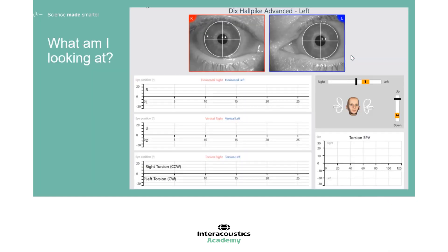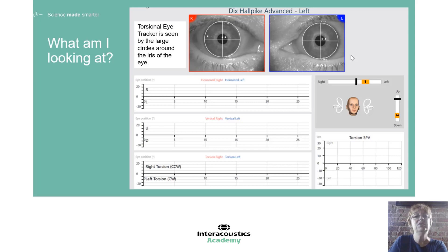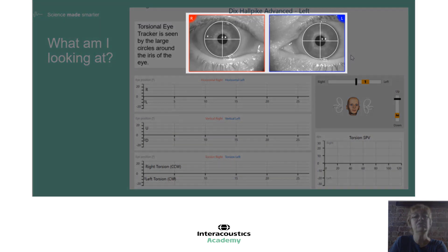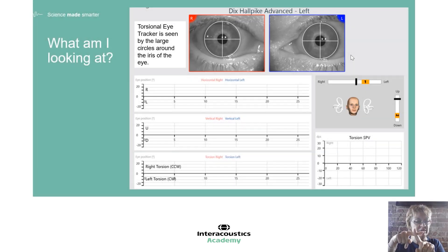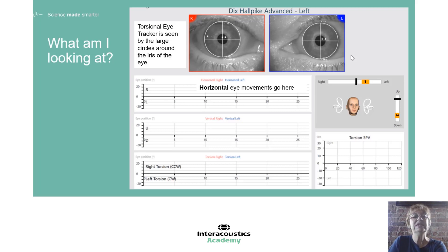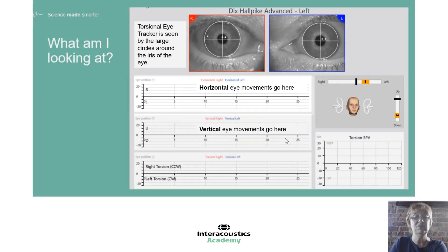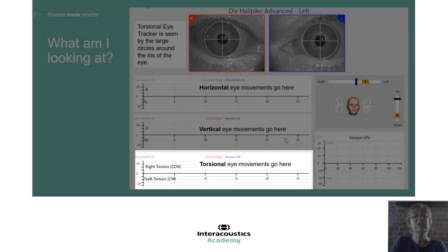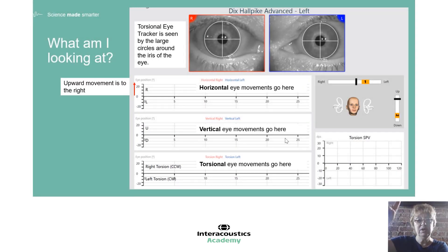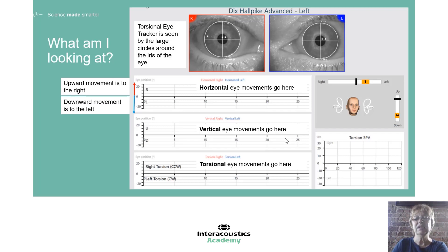So what are we looking at in the software? First, we see the eyes at the top — the torsional eye tracker is on when you see that big white circle with the large white crosshairs. When tracking only horizontal and vertical, you just see a tiny cross inside the pupil, but while tracking torsion, you see the large white circles. The middle section shows eye position graphs: the first box is horizontal eye movements, the middle is vertical, and on the bottom is torsional eye movements. In the horizontal box, things going upward mean movement to the right, and things coming down mean movement to the left.